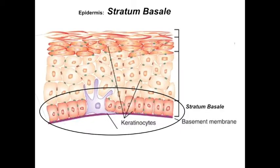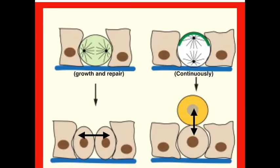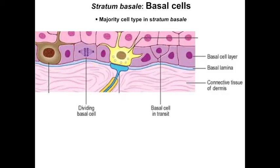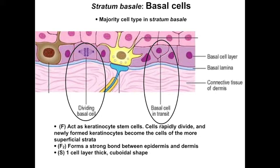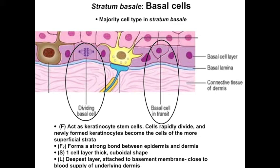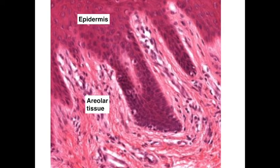The deepest layer contains all the cells that serve as a source for the more superficial cells. These cells continuously divide to replace those ultimately lost by desquamation. They can also divide when skin is growing during development or across a gap created by a cut or wound. These are the basal cells of the stratum basale, which are keratinocyte stem cells. Besides their function as stem cells, they are connected to the basement membrane — the link between the epidermis and the underlying connective tissue of the dermis — and are the closest cells to the blood supply.